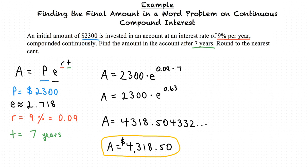after depositing 2300 dollars in an account for 7 years with a growth rate of 9 percent per year compounded continuously, we have a final value of 4318 dollars and 50 cents.